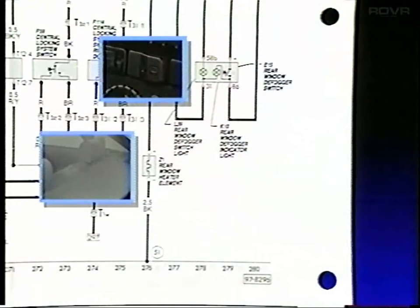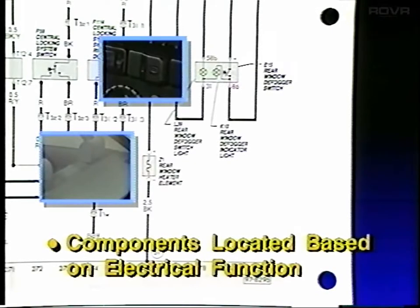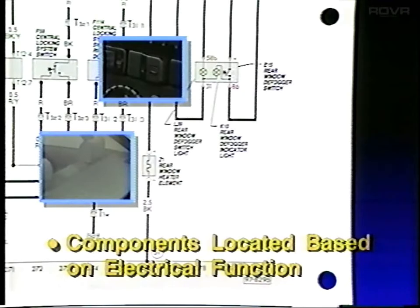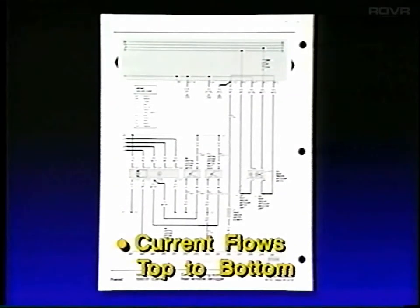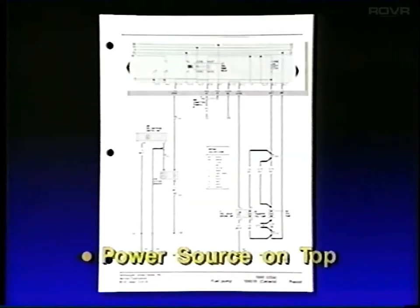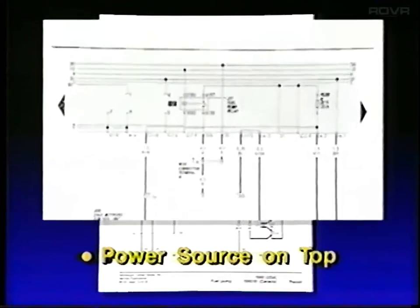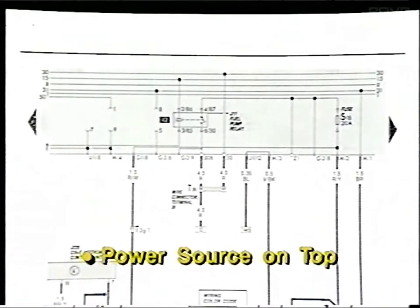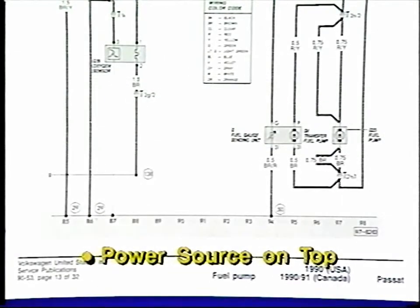Now let's briefly review what we've covered so far. Components are located according to their electrical function, not how they are located on the vehicle. The flow of electrical current is normally from top to bottom. The source of electrical power is usually towards the top of the diagram, with the ground connections being at the bottom of the page.